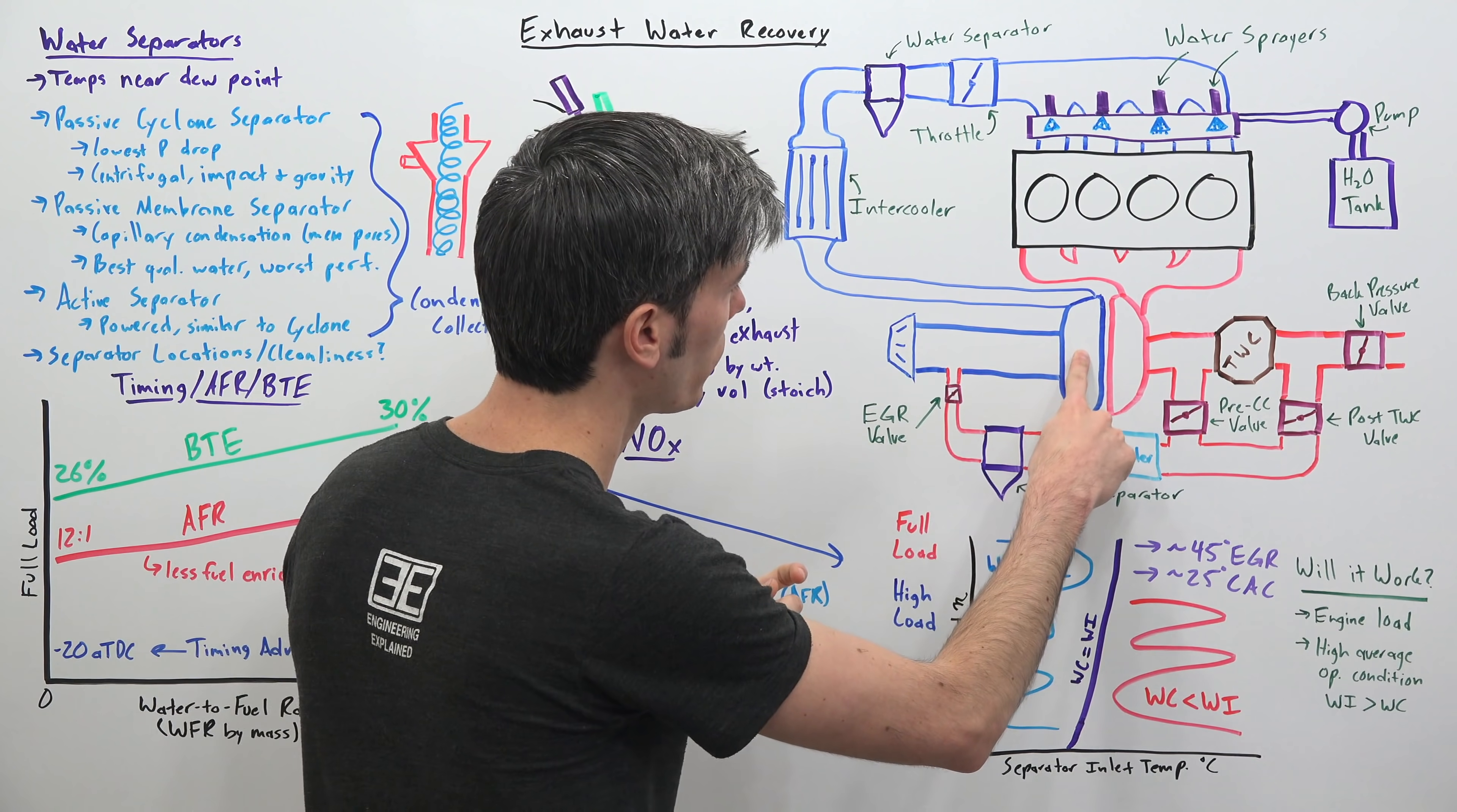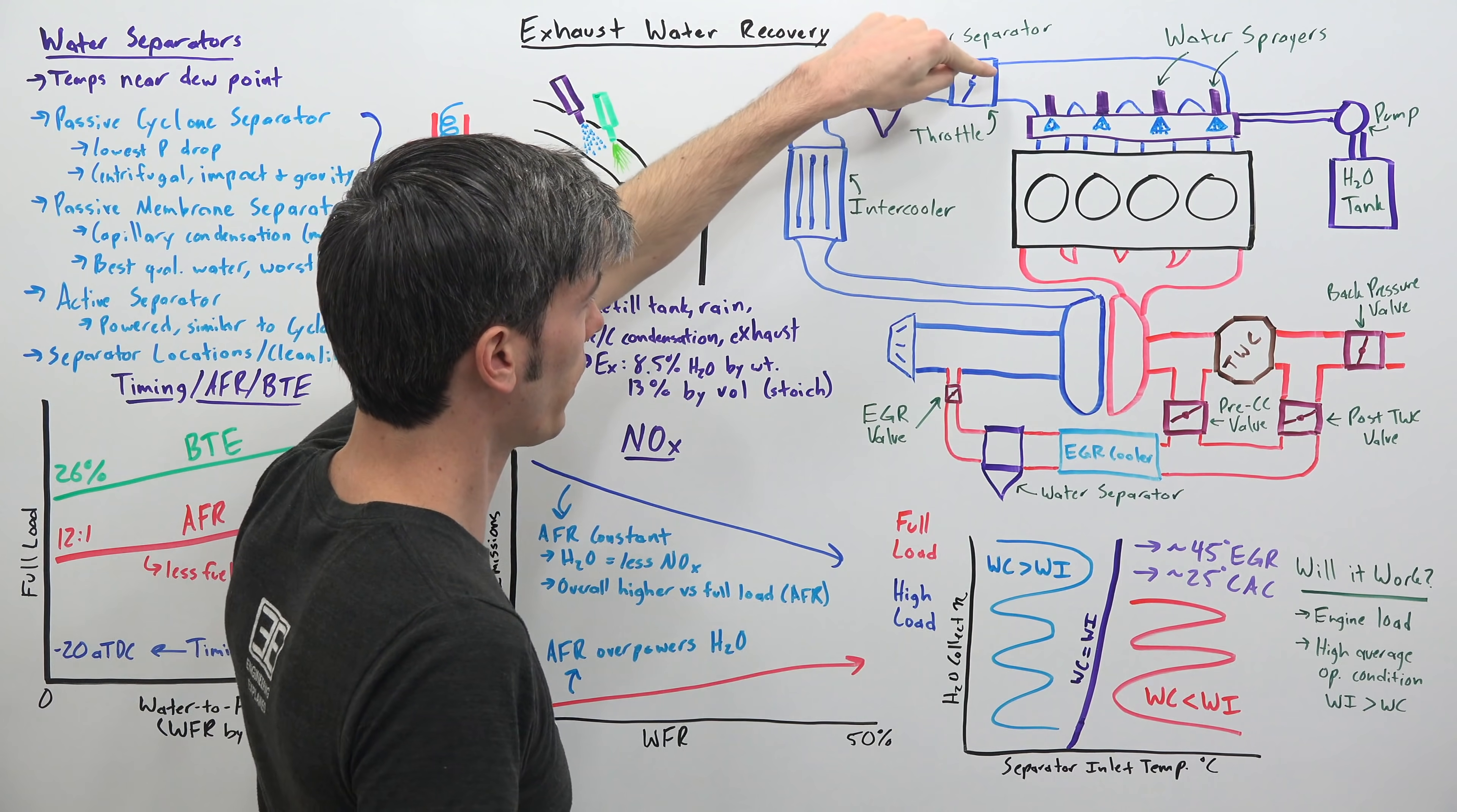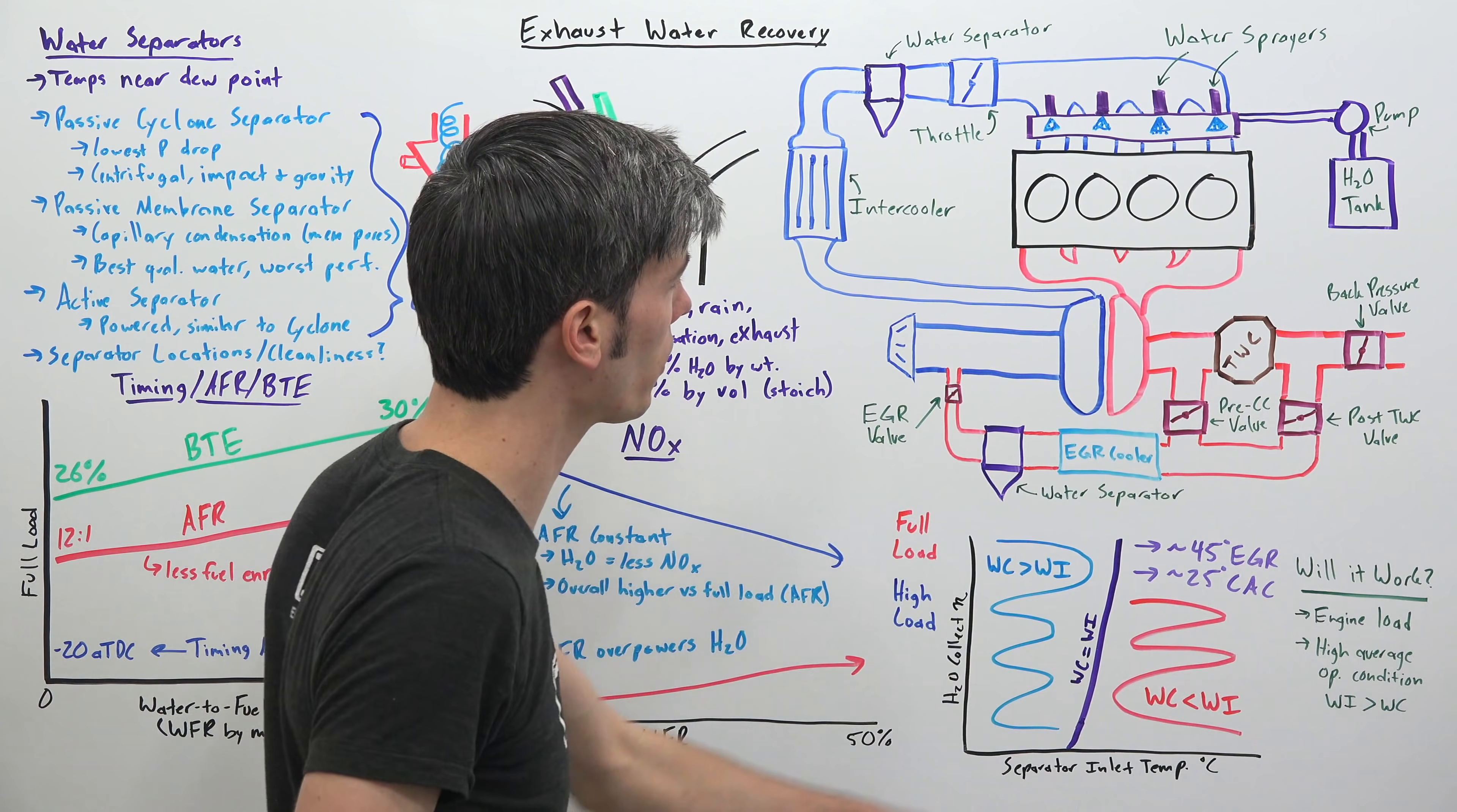So looking at the overall system here you have your air intake. Your air comes in to the compressor side of the turbocharger. It then passes through an intercooler. It then passes through a water separator, the water separator tries to collect water. We'll talk about why this is right here a little bit later in the video. Then passes through your throttle into your intake manifold. You've got this block right here where you have water sprayers injecting that water into the intake manifold before it enters into the cylinders.